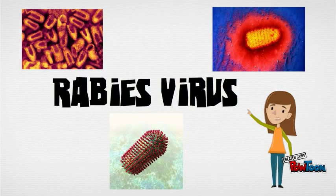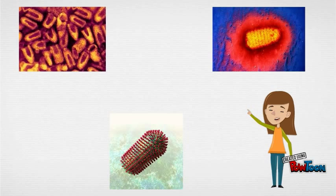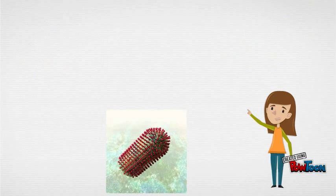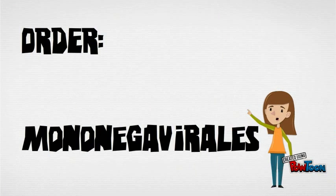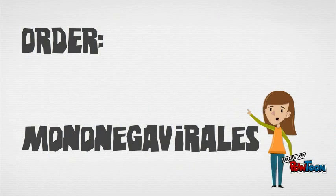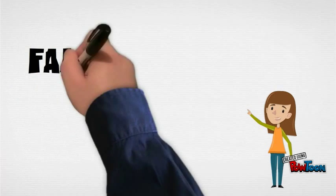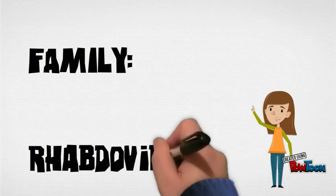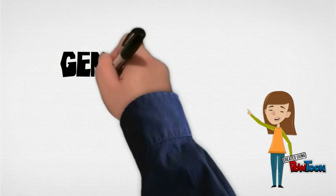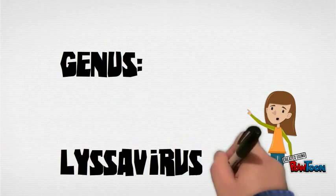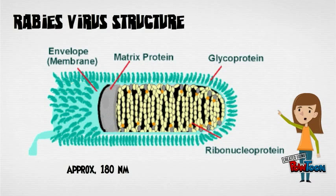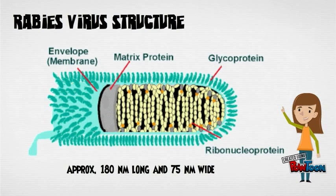The rabies virus is the preferred scientific name for rabies. Rabies virus belongs to the order Mononegavirales, the family of viruses called Rhabdoviridae, and the genus Lyssavirus. The rabies viruses are approximately 180 nm long and 75 nm wide and are bullet-shaped.